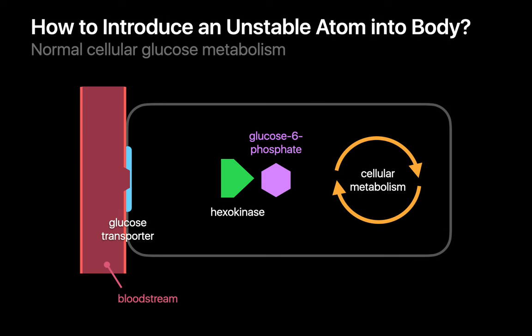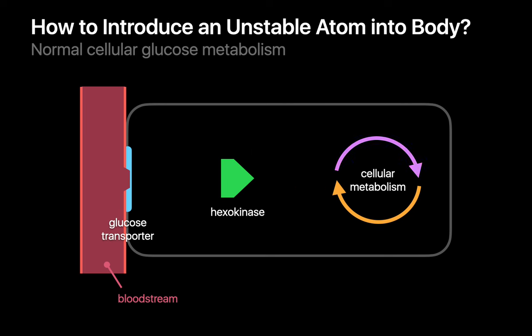This means that a phosphate group has been attached to the glucose molecule, converting it into glucose-6-phosphate. Since the glucose transporter in the cell membrane works in both directions, this important step traps the glucose-6-phosphate inside the cell and also prepares the glucose for energy extraction via metabolic pathways such as glycolysis and the Krebs cycle.